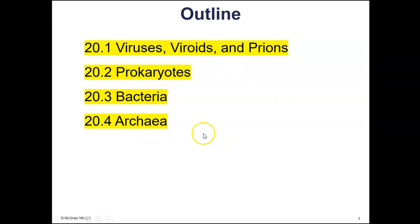Chapter 20 covers microorganisms, except for the protozoans that are in the domain Eukarya. It covers all the bacteria and the archaea — both of these are the other two domains. There are three domains: bacteria, archaea, and eukarya. Chapter 20 also covers viruses, viroids, and prions, so we'll start with those.